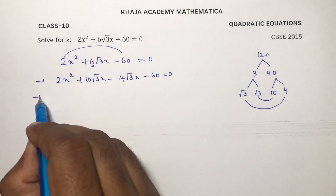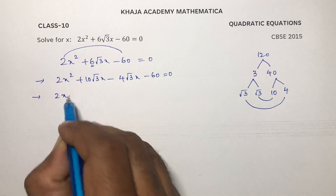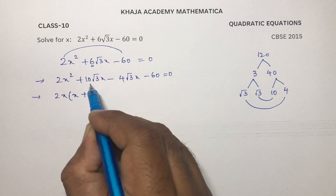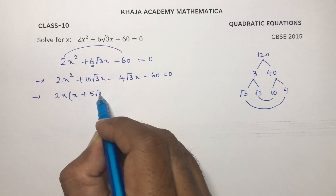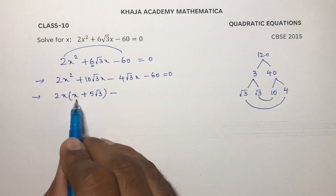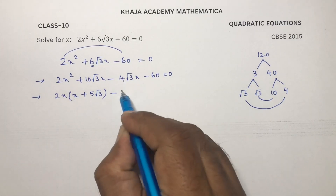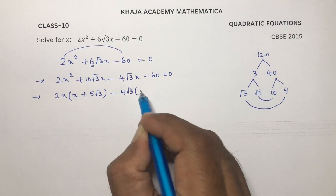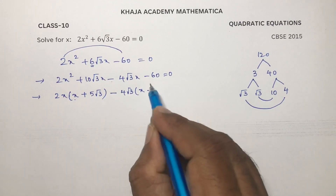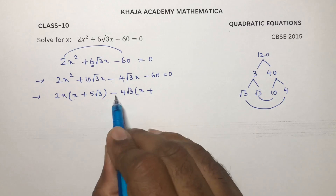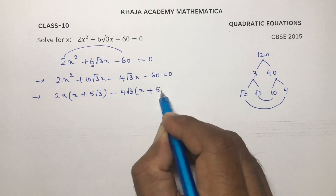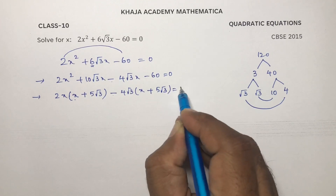Now in the first two terms, take 2x common, so you will be left with x plus 5 root 3. Then take 4 root 3 common from the last two terms — minus into minus gives plus — so you get x plus 5 root 3 equals 0.